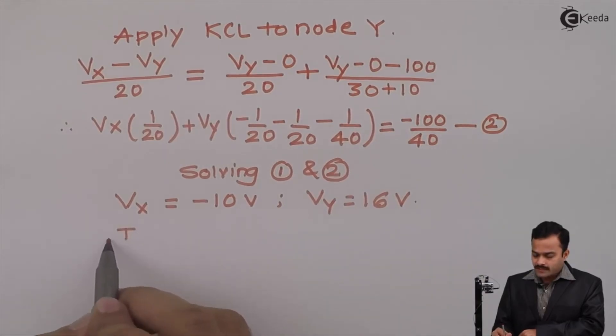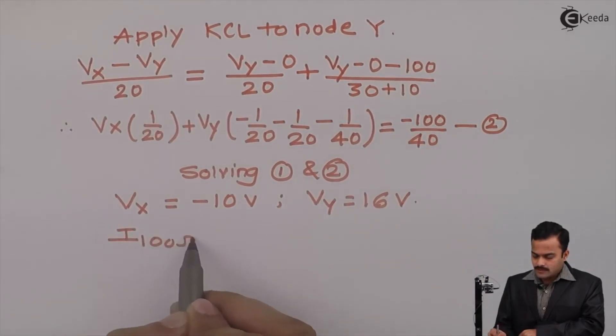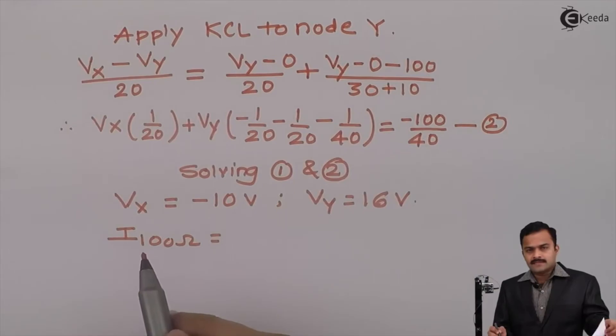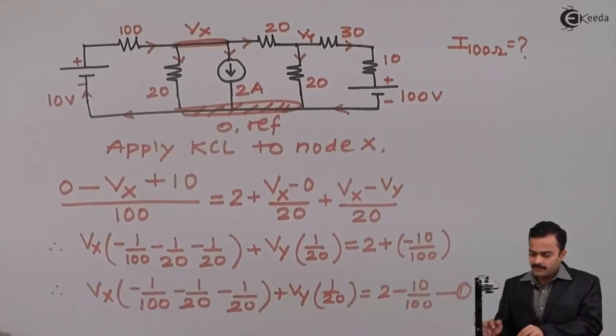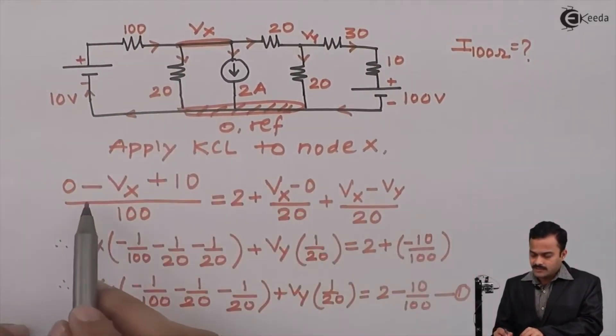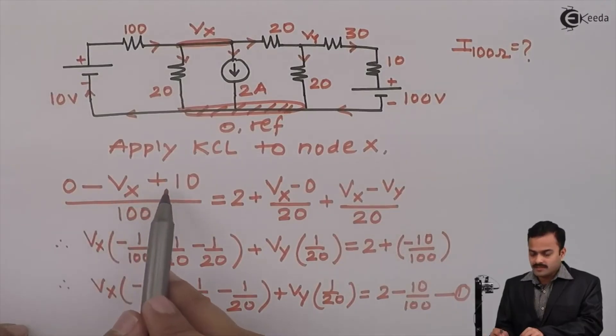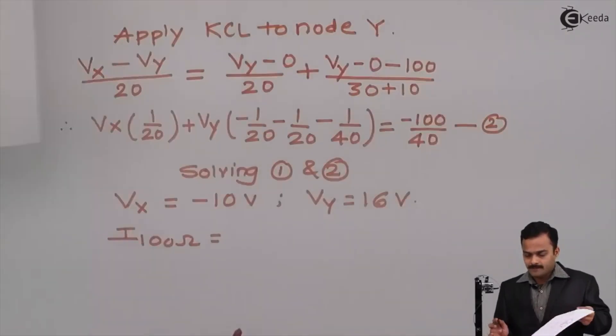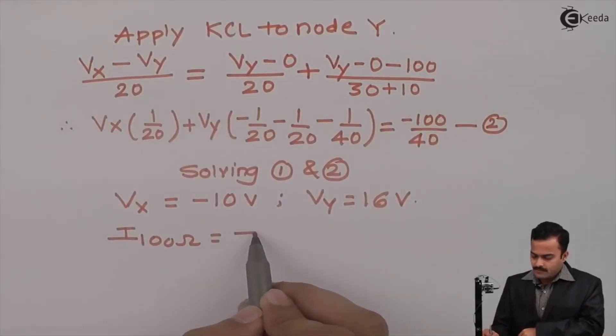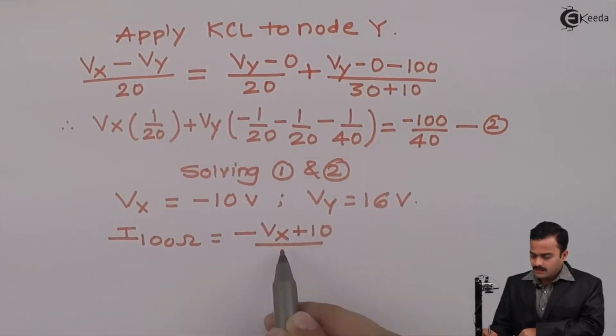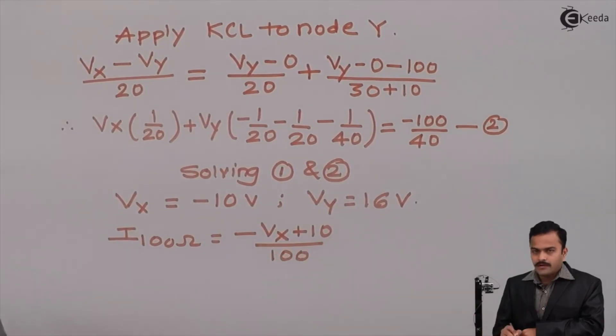My objective is to get current flowing through 100 ohm resistance. So I will consider the term for this branch current which is 0 minus Vx plus 10 divided by 100. So I can write minus Vx plus 10 divided by 100.